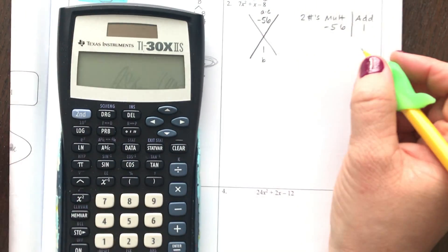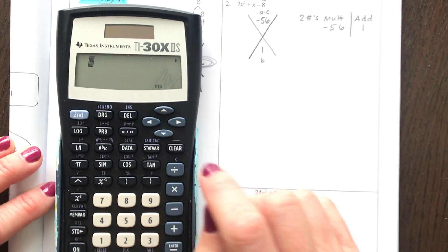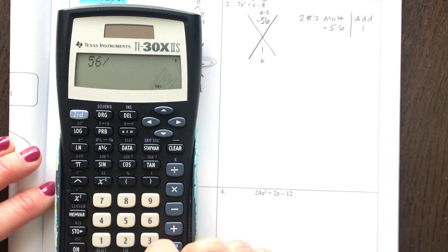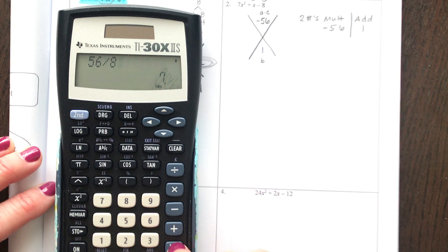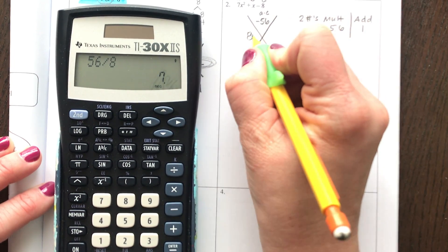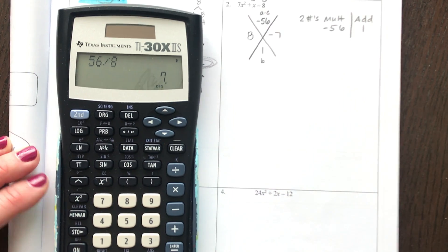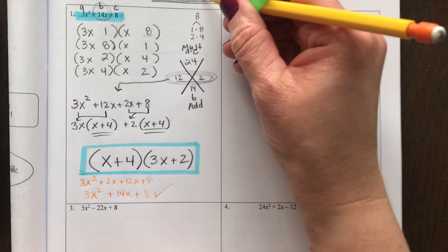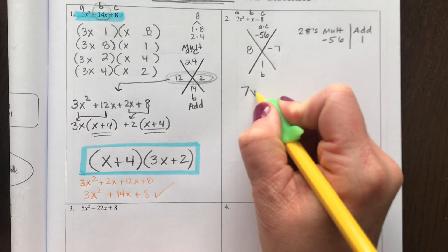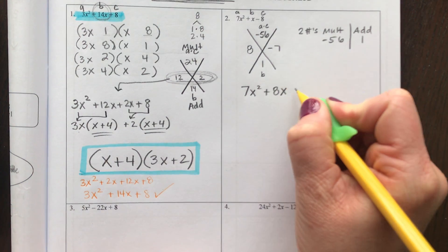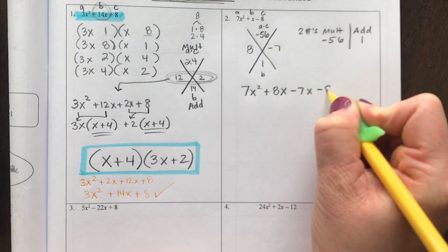So you might have to think for a little while. Let's see here. Well, what's 56 divided by 8? 7. What if we used a positive 8 and a negative 7? Let's try it. So my middle is what gets split. That's why I called split the middle method. So 7x². Now, instead of 1x, I'm going to write an 8x, a -7x, and a -8.